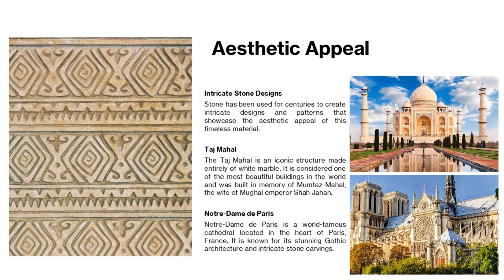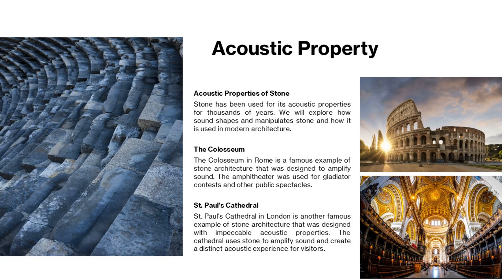For aesthetic appeal, two of the most iconic buildings are the Taj Mahal and Notre Dame de Paris Cathedral. Both these buildings have intricate stone carvings, which is why they are aesthetically appealing. Stone has been used for its acoustic properties for thousands of years — we will explore how sound shapes and manipulates stones and how it is used in modern architecture. The Colosseum and St. Paul's Cathedral are among the most iconic examples for acoustic properties.